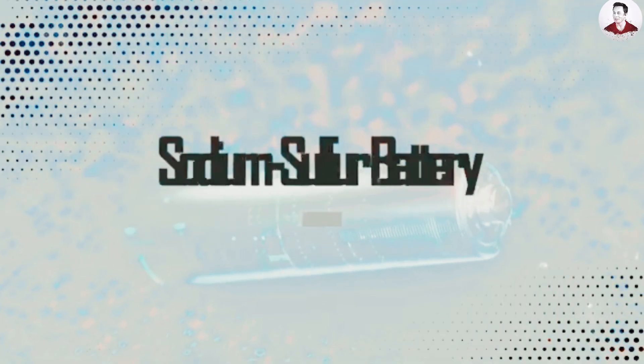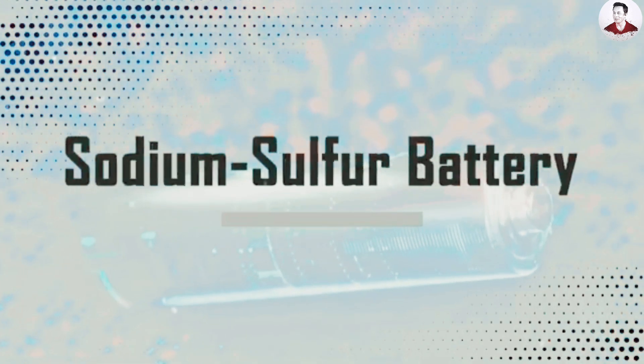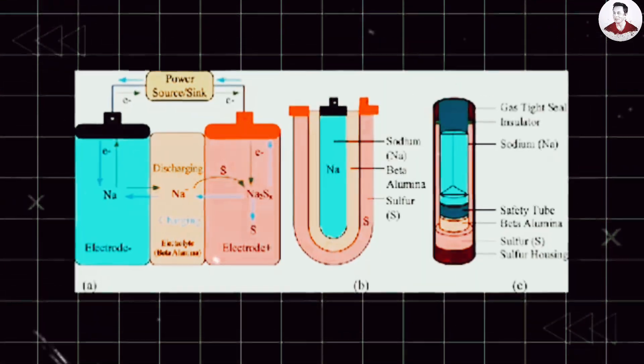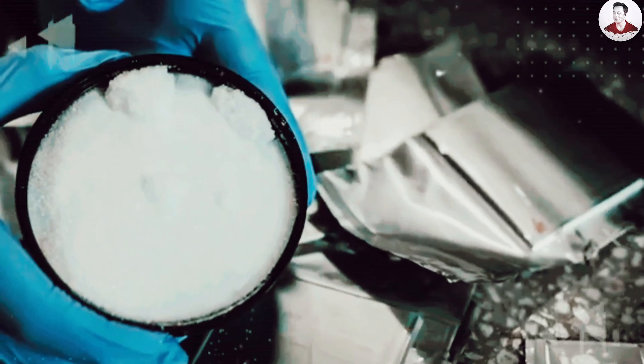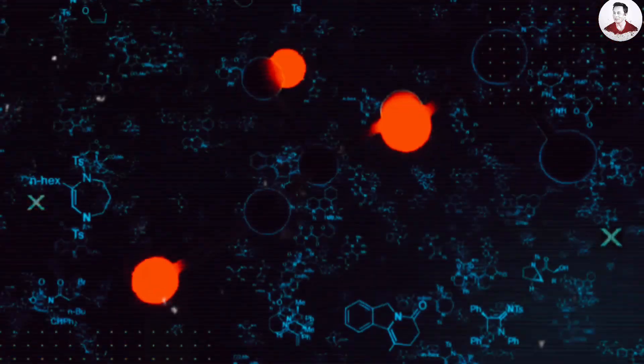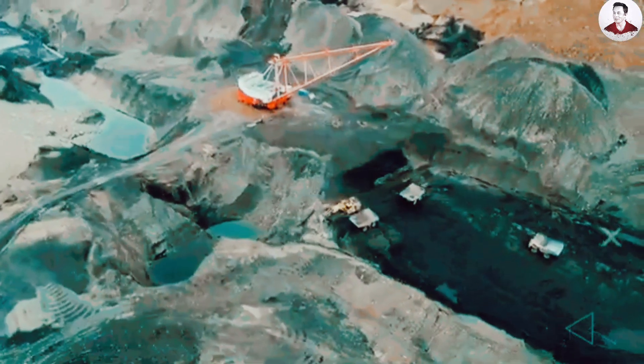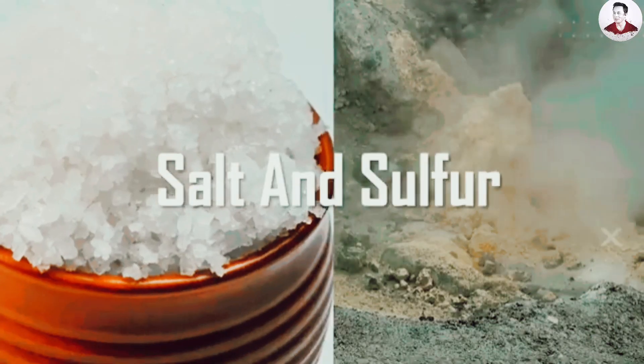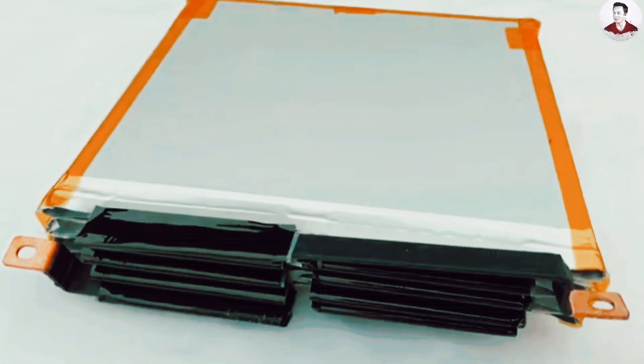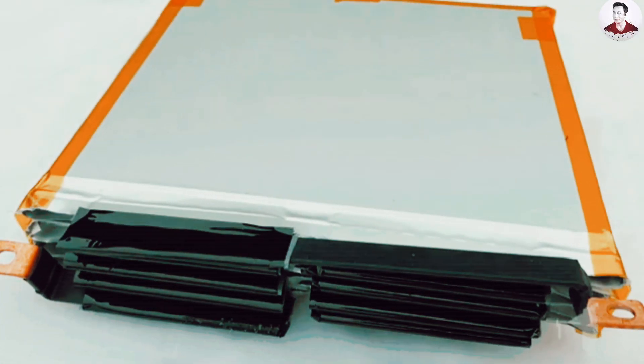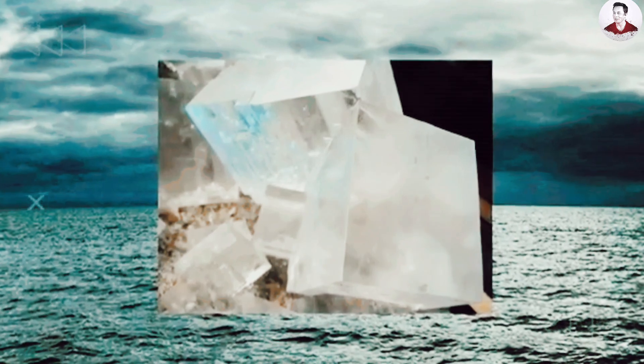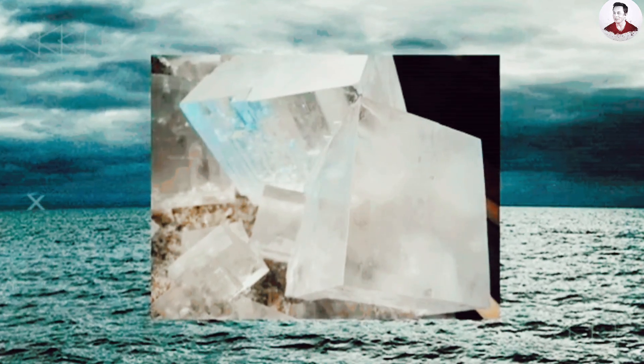Could sodium sulfur be the lithium killer? The next big thing in battery innovation might already be here, the second-generation sodium sulfur battery, developed by researchers at the University of Sydney. Unlike lithium-ion batteries that depend on rare, geographically limited elements, these new cells use salt and sulfur, materials that are widely available and inexpensive. That makes them over 1,000 times more accessible than lithium, drastically reducing both environmental damage and geopolitical risk.